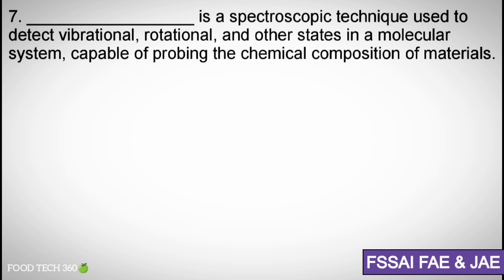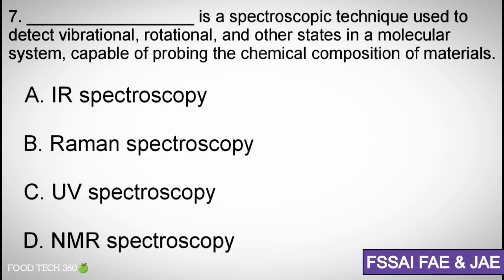Question number seven: Blank is a spectroscopic technique used to detect vibrational, rotational, and other states in a molecular system, capable of probing the chemical composition of materials. Options: (a) IR spectroscopy, (b) Raman spectroscopy, (c) UV spectroscopy, (d) NMR spectroscopy.